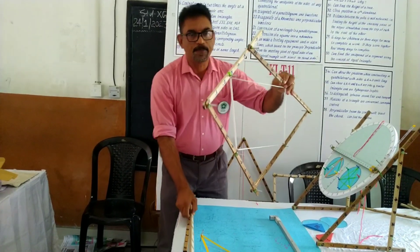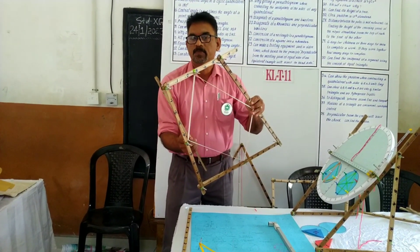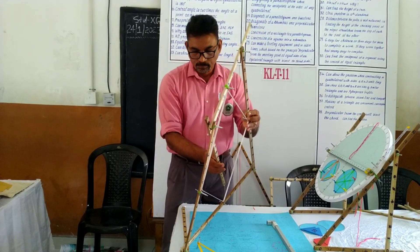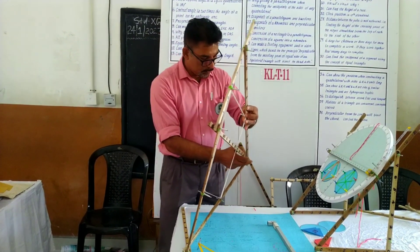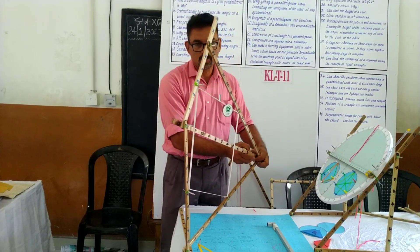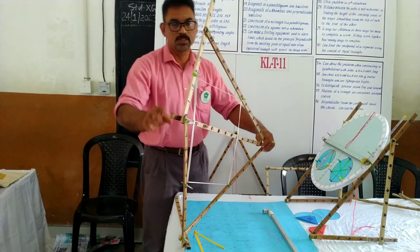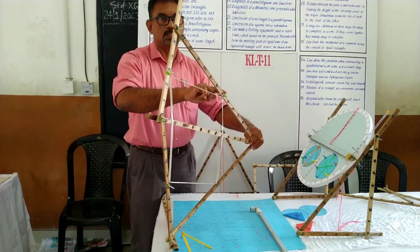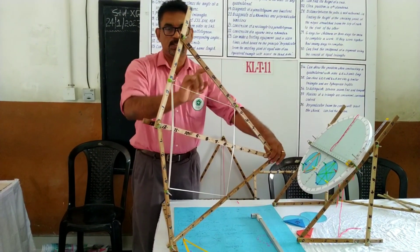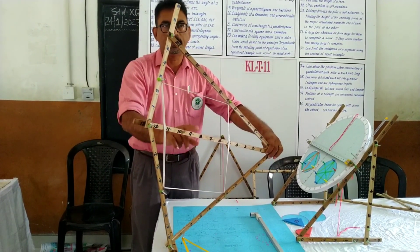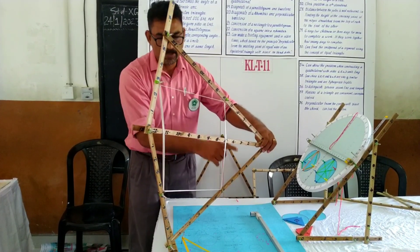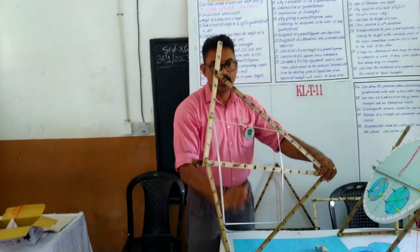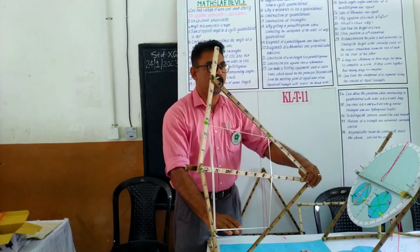Why this is a parallelogram — we can easily explain using a concept taught in 9th standard. Suppose you are connecting these two vertices; that means this is our diagonal. There is a theorem that if you connect the midpoints of any two sides of a triangle, that line will be parallel to the third side. In the same case, this is parallel to this one, and both lines are parallel to the same line, therefore these are parallel.